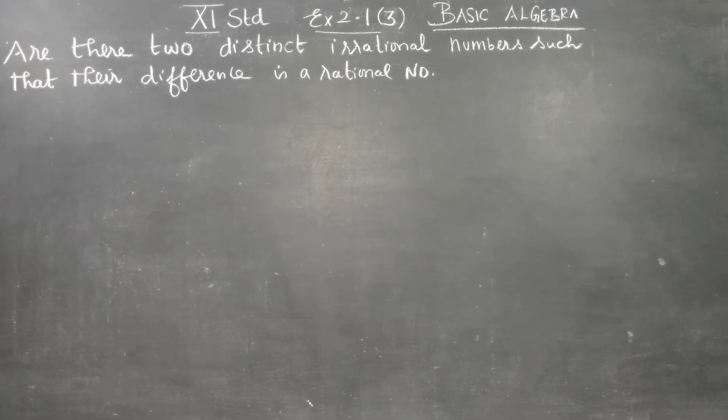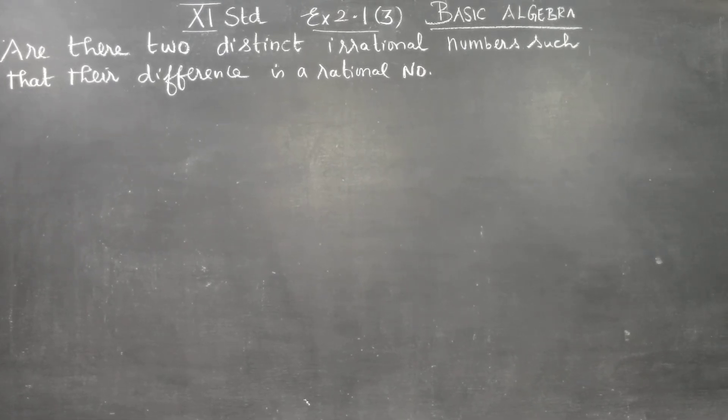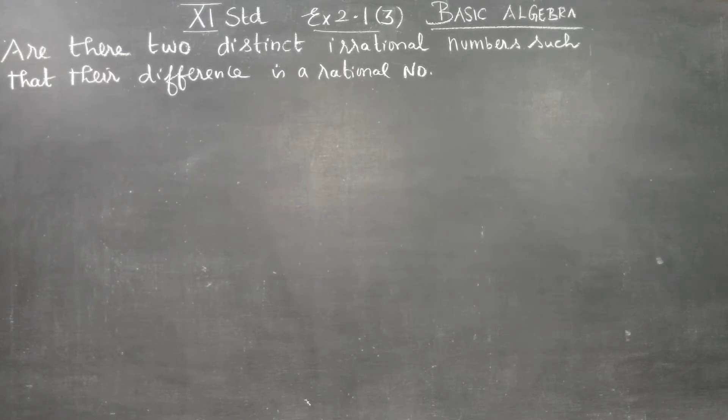Dear 11th standard students, in basic algebra 2.1, 3rd sum, are there two distinct irrational numbers such that their difference is a rational number?